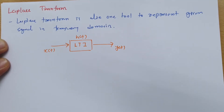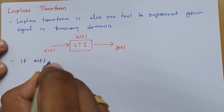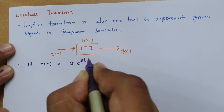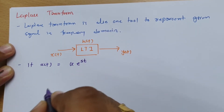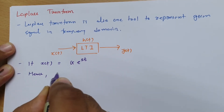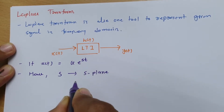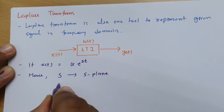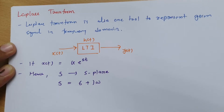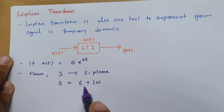Now, if I say I have a signal x(t) equal to g times e to the power st, here s is the Laplace domain representation — that is, the s-plane. In Laplace transform, we express frequency in terms of the s-plane, and this frequency s equals the real part plus the imaginary part.